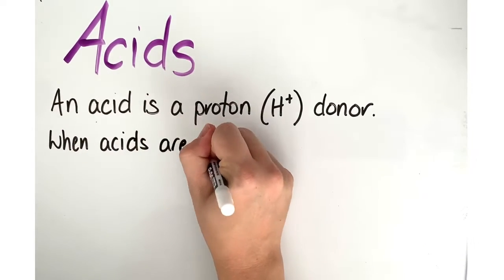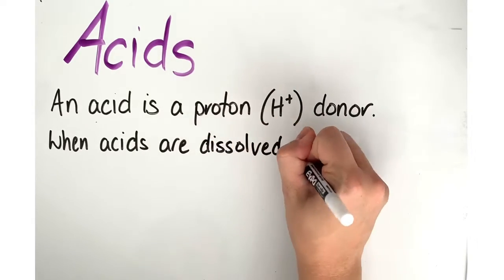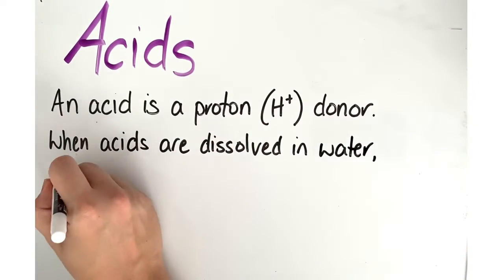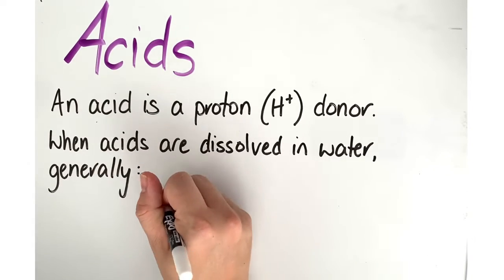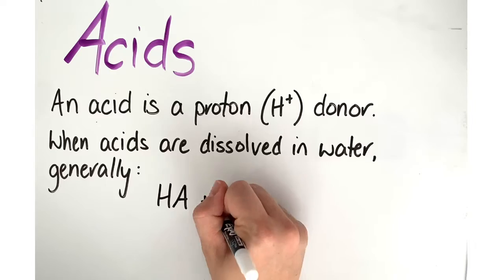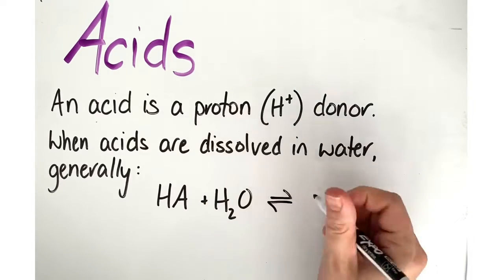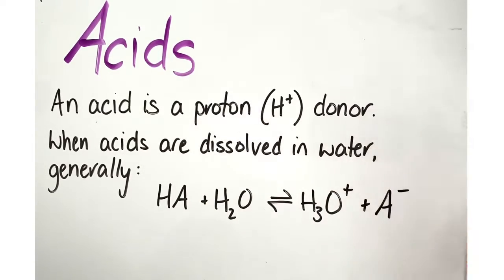When an acid dissolves in water, a proton or hydrogen ion is transferred to a water molecule to produce a hydronium ion, H3O+, in addition to a negative ion. The identity of the negative ion depends on what acid you are starting from.